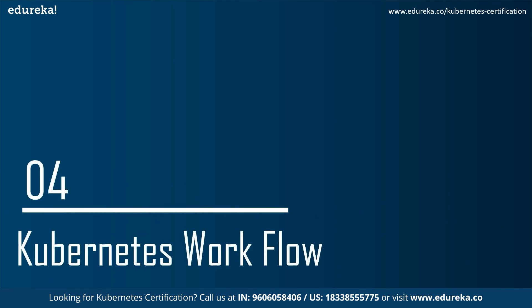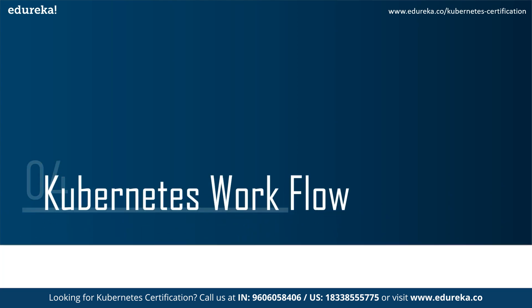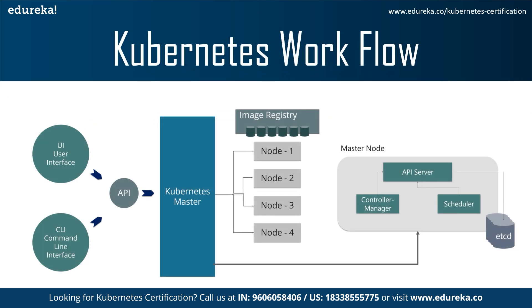Moving ahead, let's understand the workflow — or architecture — of Kubernetes. It has two main components known as the master node and the worker or slave nodes. The master node is responsible for the management of the Kubernetes cluster and is the entry point for all administrative tasks. There can be more than one master node in the cluster to check for fault tolerance.